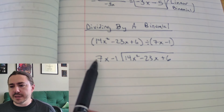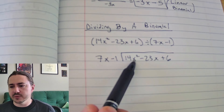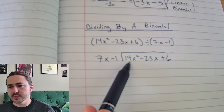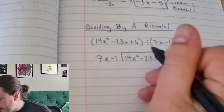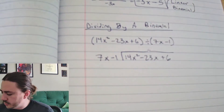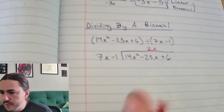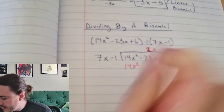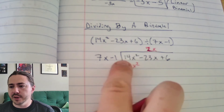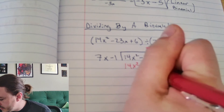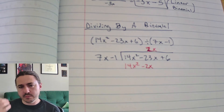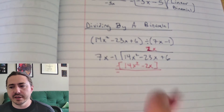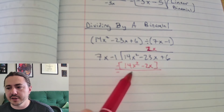I need to multiply 7 by 2 to get 14, and I need an x — so I need 2x. I multiply 2x by the entire divisor: 2x times 7x is 14x squared, and 2x times negative 1 is negative 2x. I write 2x on top, then subtract downward: 14x squared minus 14x squared is 0 — that term disappears, which is intentional. That's the whole reason we picked 2x, so that when we subtract, the first term vanishes.